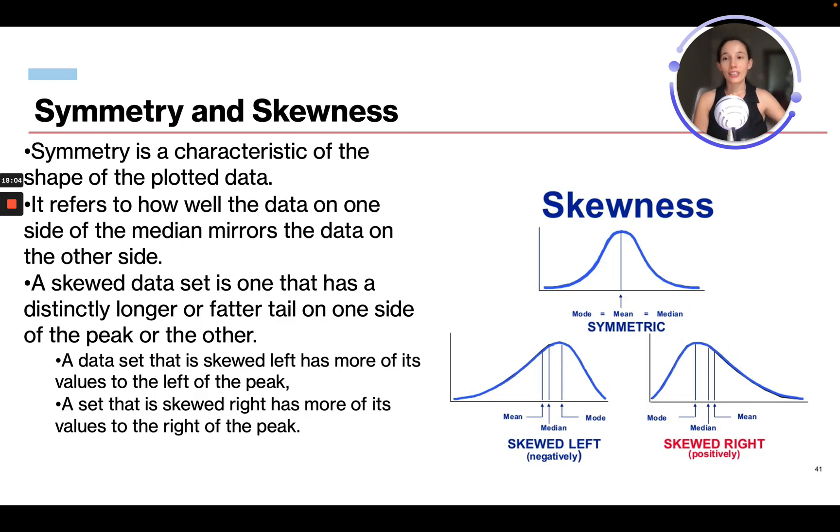All right. And symmetry and skewness. So symmetry is a characteristic of the shape of plotted data. It refers to how well the data on one side of the median mirrors the data on the other side. A skewed data set is one that has a distinctly longer or flatter tail on one side of the peak than the other.